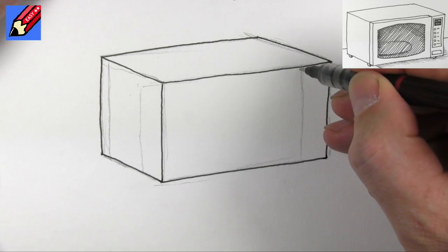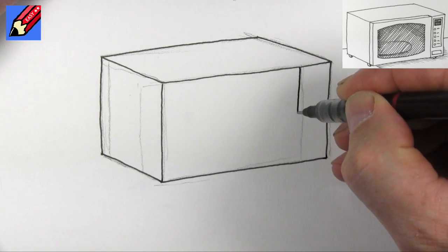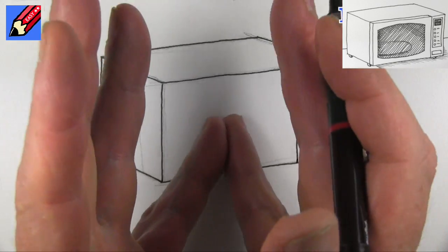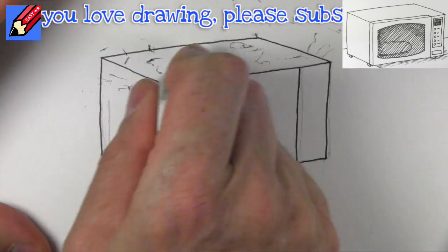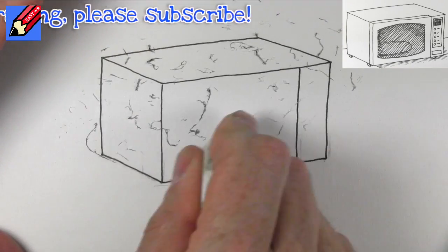There we have the box. Now I'm going to draw a line down there, so this is the door on this side and the control panel on that side. When you're sure that the ink is dry, then you can erase all those pencil lines.